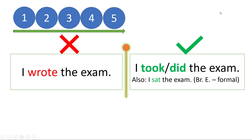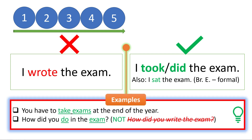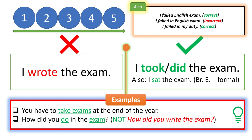Look at these examples: 'You have to take exams at the end of the year.' 'How did you do in the exam?' — don't say 'how did you write in the exam.' Students write answers in the exam, but you cannot say 'write the exam.' Also: 'I failed the English exam' — do not say 'I failed in English exam.' However, you can say 'I failed in my duty.' When you talk about responsibility or duty, you can say 'fail in duty' or 'fail in responsibility.' But when talking about a test or exam, don't use 'in' before the subject name.